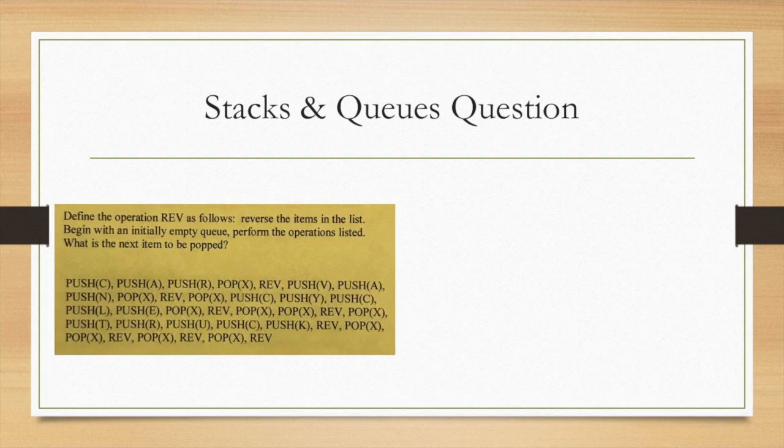Our last question is going to be quite a long one. It's a stacks and queues one. They've defined REV as reversing the items in the list. This is going to be a queue question. So you start with the queue form, and it's not going to be a stack. Here we start with pushing C, A, R. Then we pop the C, which is coming first. It's a queue, so it's like a line. The first person who goes in the line is the first person to come out. Then you reverse it, so that'll make it R, A.